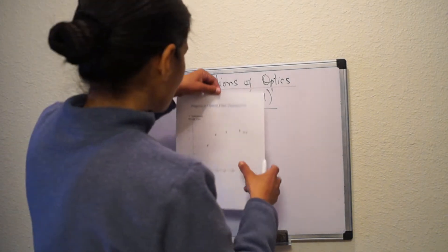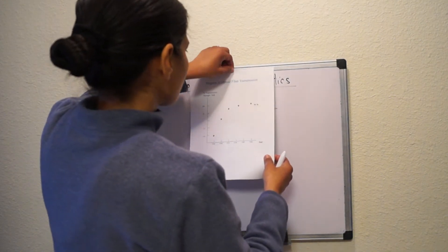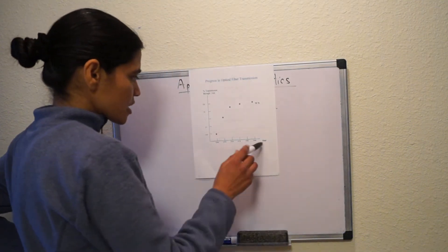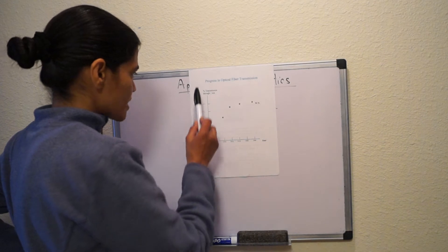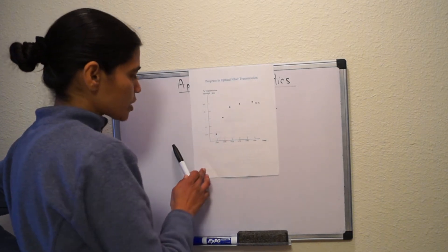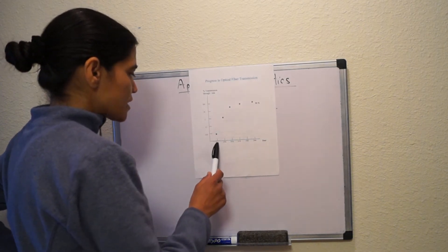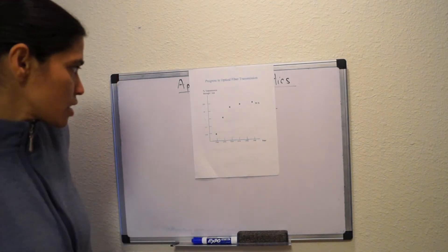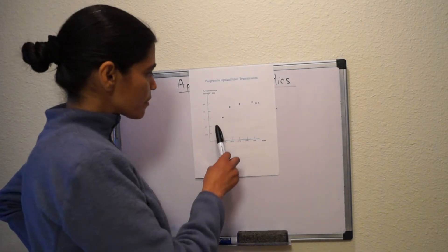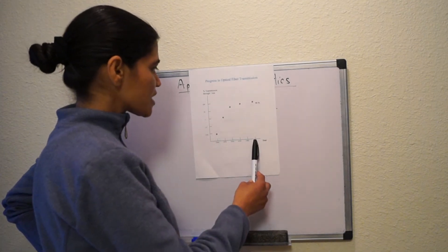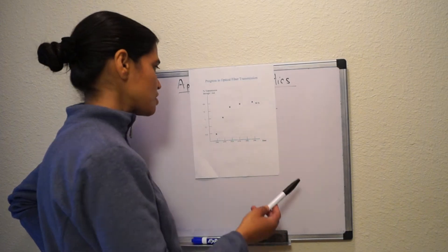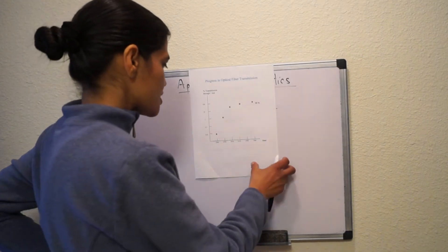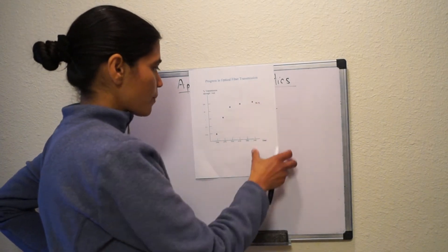If we look at the progress in optical fiber transmission, there is a graph with years on the x-axis and percentage of transmission through one kilometer on the y-axis. Early in 1966, we had really low transmission — like one percent. But by 1986, we got about 96% transmission through one kilometer. That's pretty good progress — very rapid improvement.